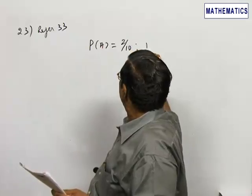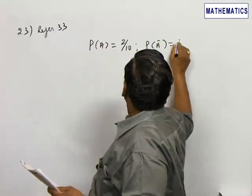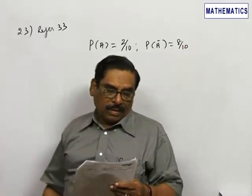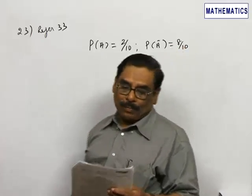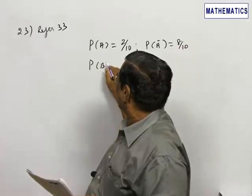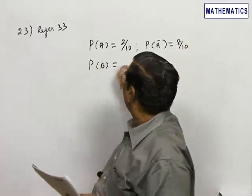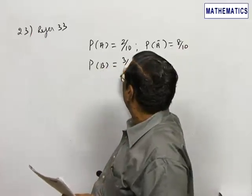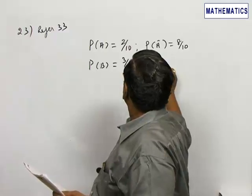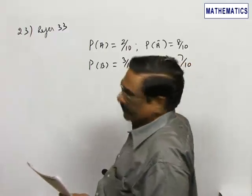Immediately mark this also. A not passing in the examination will be equal to 8 by 10. The probability of B passing the examination, the next event B, is equal to 3 by 10. The probability of B not passing that examination is equal to 7 by 10.